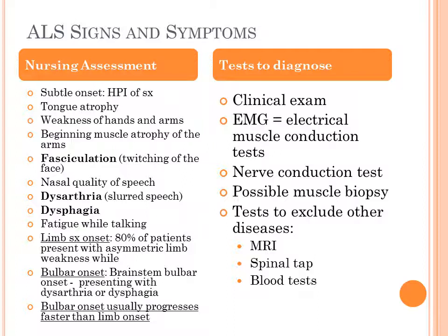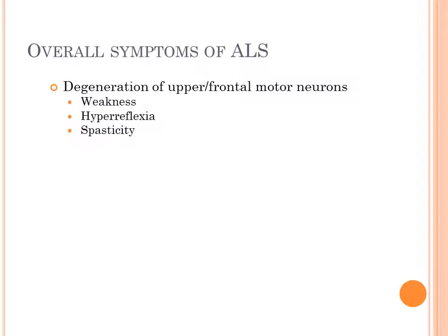Away from the bedside, what are we going to use to diagnose? We'll probably do an EMG — electrical muscle conduction test — to see if those muscles are conducting normally or if they are truly over-excited. Perhaps a nerve conduction test as well. Possibly a muscle biopsy looking for abnormalities in proteins. ALS may also be a disease of exclusion, using MRI, spinal tap, or blood panels to exclude infection or other causes.